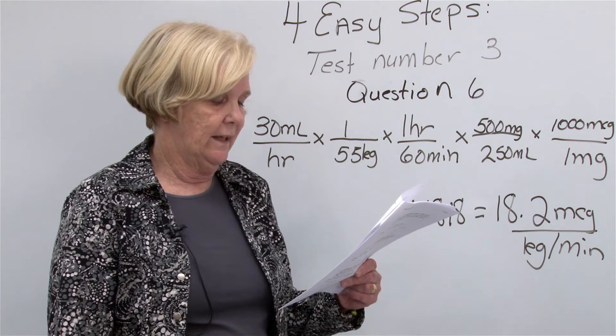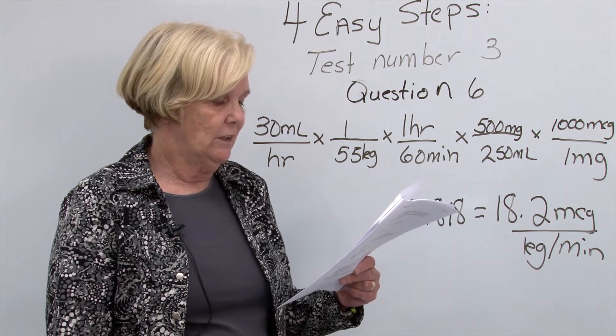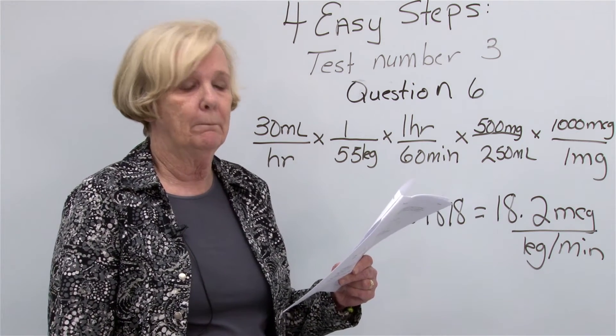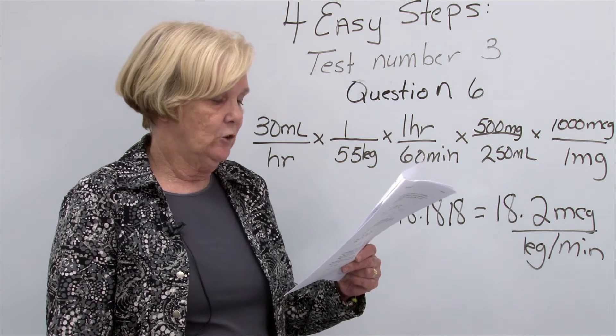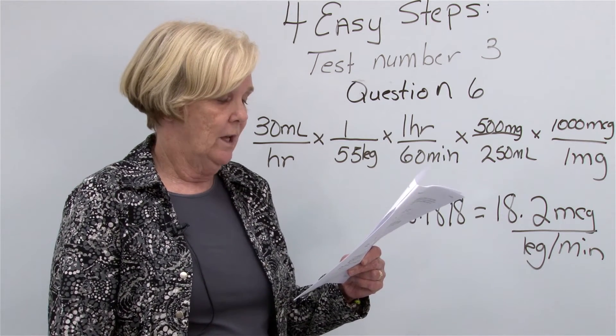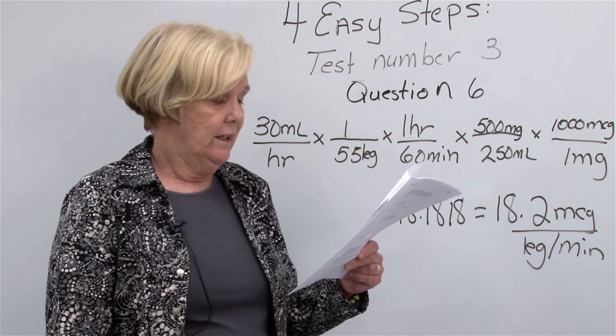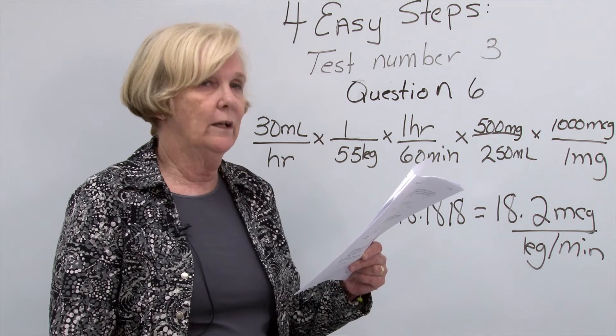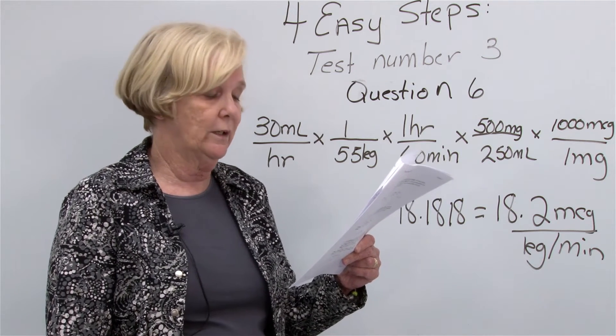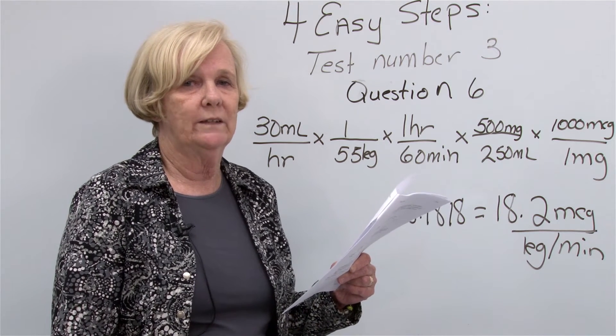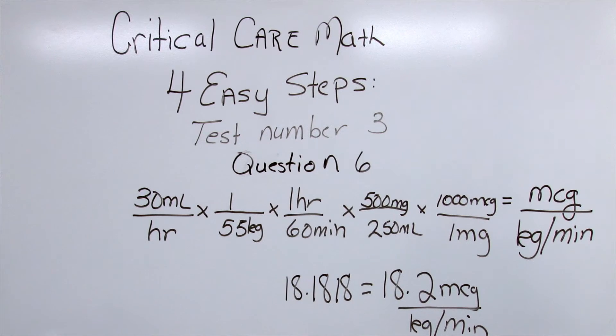Your friend tells you you've always been a math whiz and asks you to figure out how much Nipride his patient is receiving in micrograms per kilogram per minute. He tells you that his patient weighs 55 kilograms. You see the IV pump is set at 30 mils per hour, and the question asks, can you help your friend out and figure out how many micrograms per kilogram per minute this patient is receiving and round your answer to one decimal place. Okay, after reading all of that, we figured out what this problem was actually asking us for was micrograms per kilogram per minute.